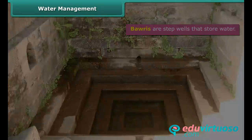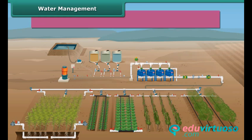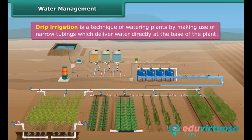A farmer can use the drip irrigation system to water his fields and conserve water. Drip irrigation is a technique of watering plants by making use of narrow tubing, which delivers water directly at the base of the plant.